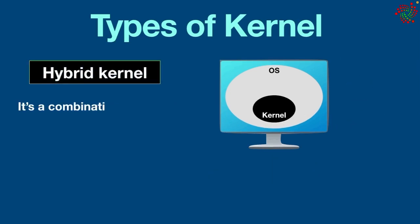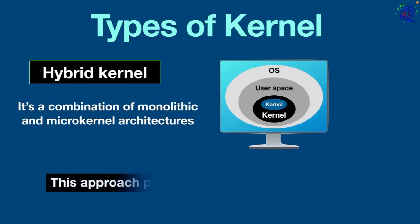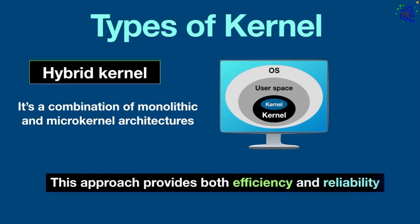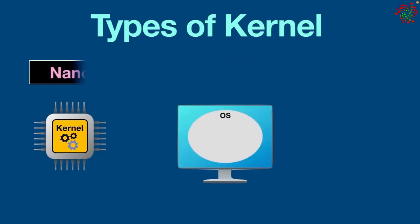Hybrid kernel: it's a combination of monolithic and micro kernel architectures. It includes a small kernel in kernel space with other services running in user space. This approach provides both efficiency and reliability. Examples are Windows NT, XP, Vista, 7, 8, and 10, and macOS versions before 11.